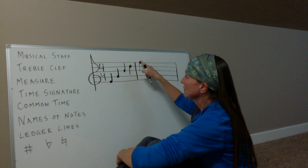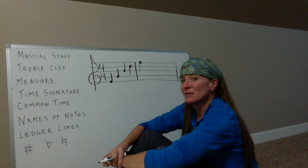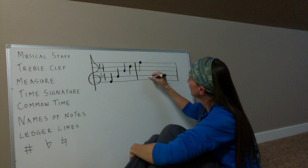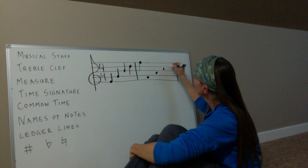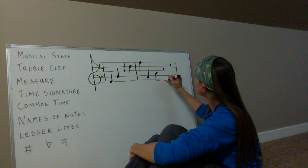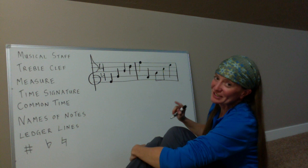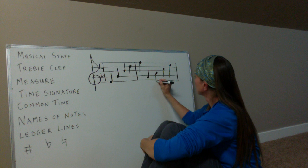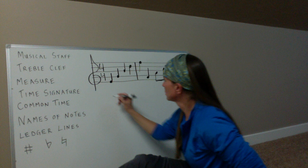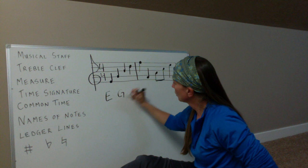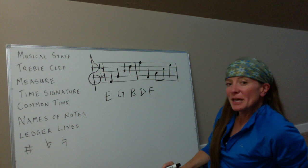Now let's do the names of the notes on the spaces. The spaces are F, A, C, E — which spells 'face.' So the lines are every good boy does fine, and the spaces are F, A, C, E. Just write that down on your notes if you need it.